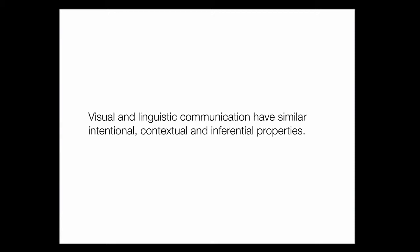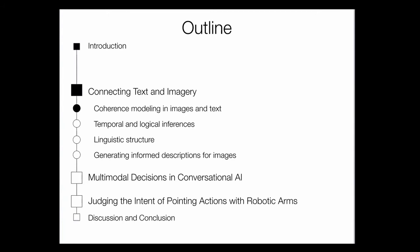What I'm going to argue is that although at the surface level visual and linguistic communications are vastly different — they communicate differently and have different characteristics — they have similar intentional, contextual, and inferential properties. In this first talk, I'm going to argue that coherence modeling can help us teach machines to connect text and imagery.